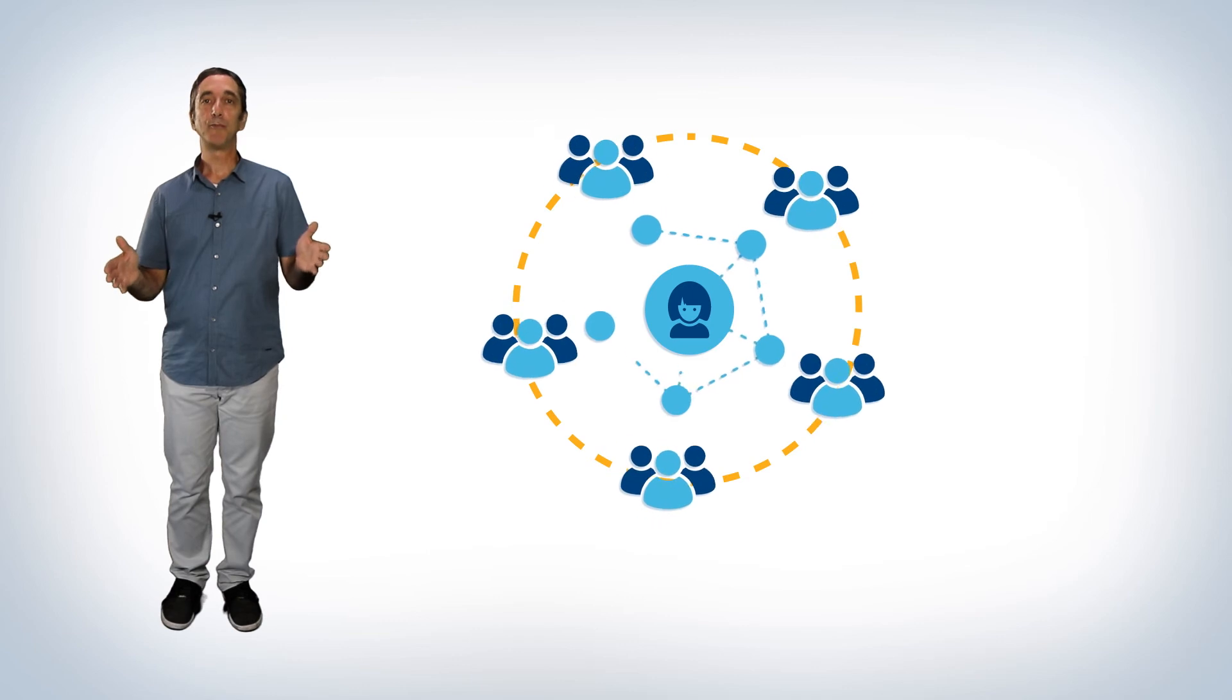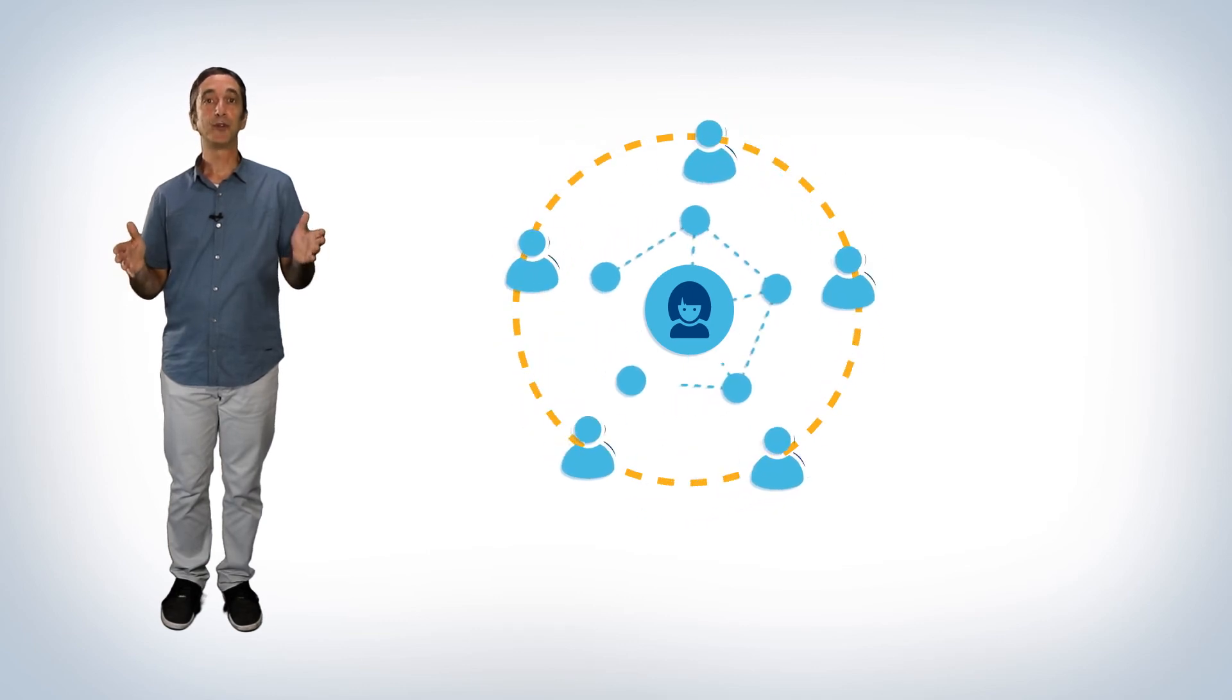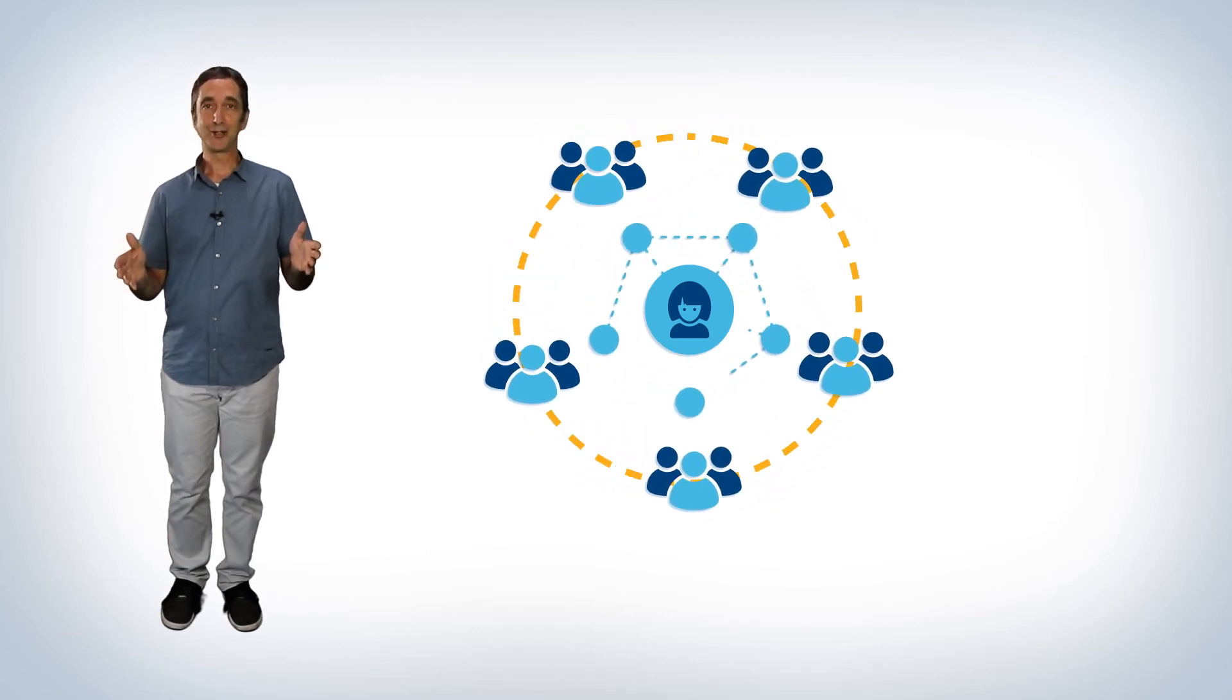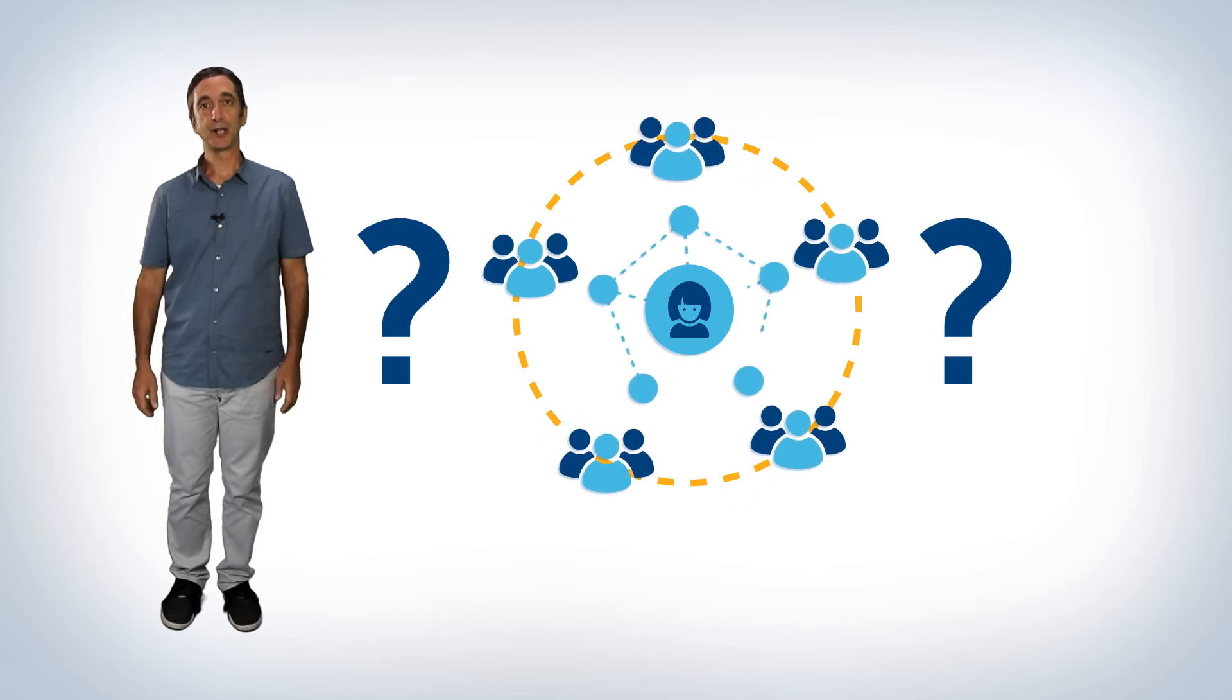Now, take a step back. With your stakeholder map, you've just created a picture of your business ecosystem. Congratulations! But is it the right picture? In order to find that out, we're going to use some more observational techniques.